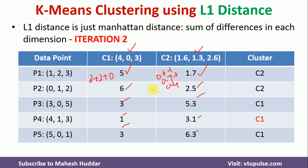Based on the minimum distances in the second iteration: P1 has distances 5 and 1.7, so 1.7 is smallest and P1 is assigned to C2. P2 has distances 6 and 2.5, so P2 is assigned to C2. P3 has distances 3 and 5.3, so P3 is assigned to C1. P4 has distances 1 and 3.1, so P4 is assigned to C1. P5 has distances 3 and 6.3, so P5 is assigned to C1.